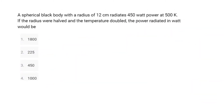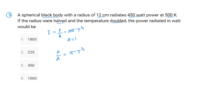Second question: a spherical blackbody with radius 12 cm radiates 450 watts at 500 K. If the radius is halved and the temperature is doubled, what is the power radiated? This is based on Stefan-Boltzmann Law: intensity equals power per unit area equals sigma T to the 4th. Since it's a blackbody, emissivity equals 1.